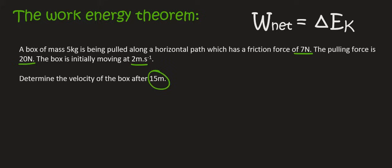So there are various ways that you can do this. One of them is to go work out W net first. So let's do that because we're quite good at that by now. So we know that W net is equal to F net times by the change in the displacement times by cos theta.